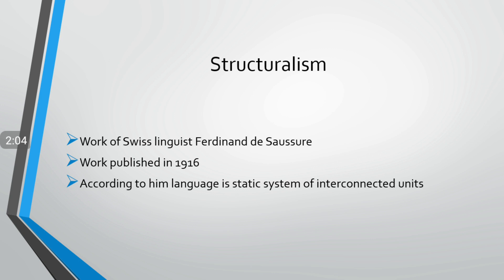The structuralism theory was put forward by Ferdinand de Saussure, and it was first published in 1916 in his work. According to structuralism, language is a static system of interconnected units. We do have components and units of language and those are interconnected to convey the right message. We have structures and we need to follow certain rules which work under those structures, and in this way language can be acquired or understood by any speaker or listener.